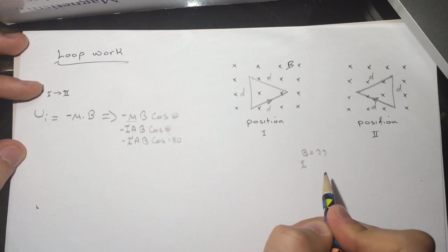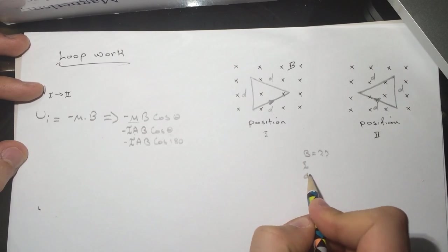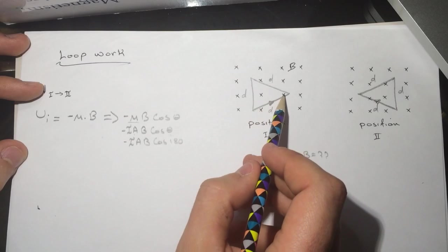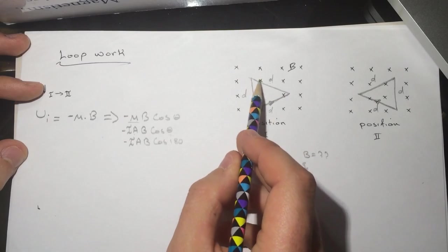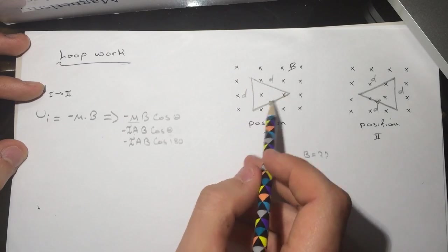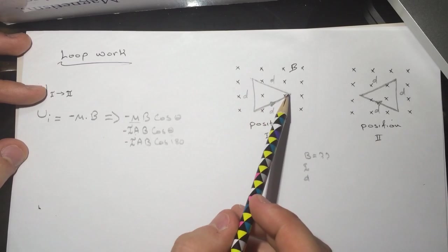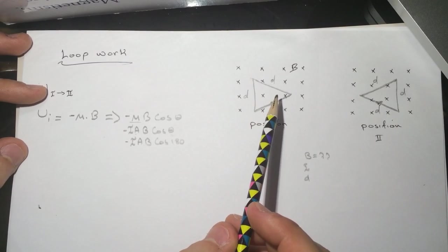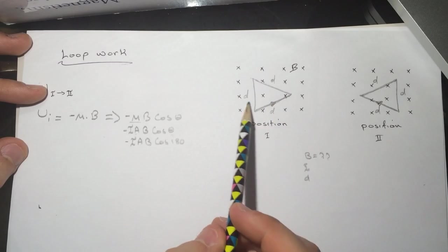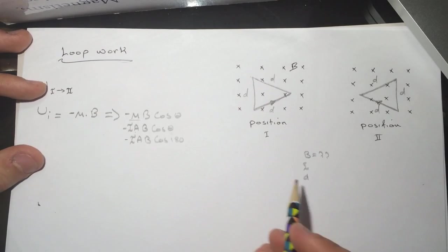In the question they gave us the B, they gave us the I, and they gave us the D. The D is the part of the triangle, and the triangle has all sides the same.